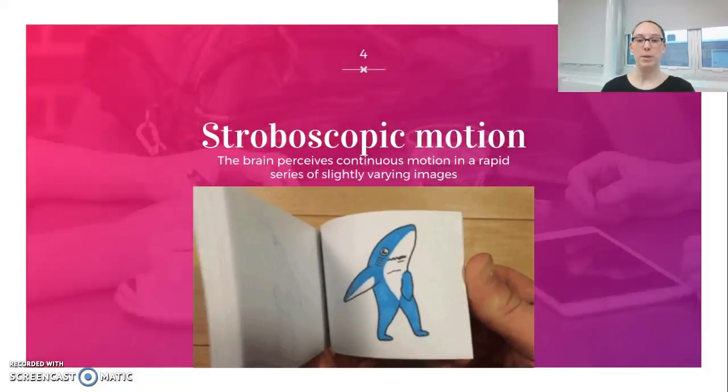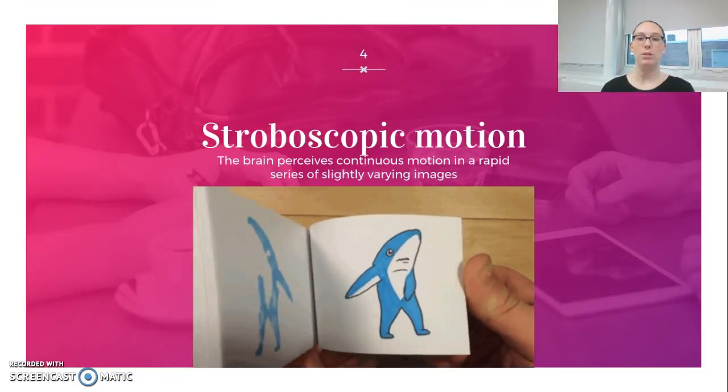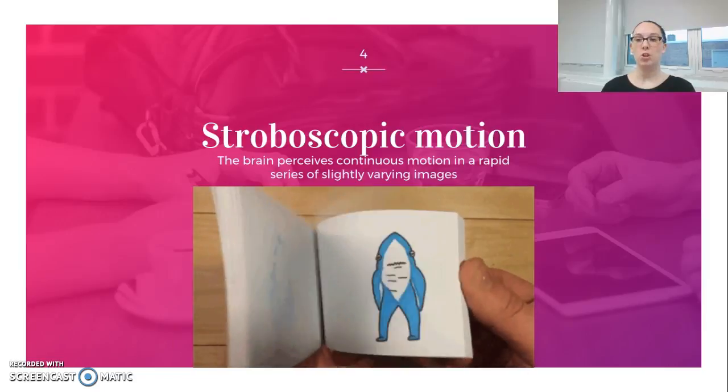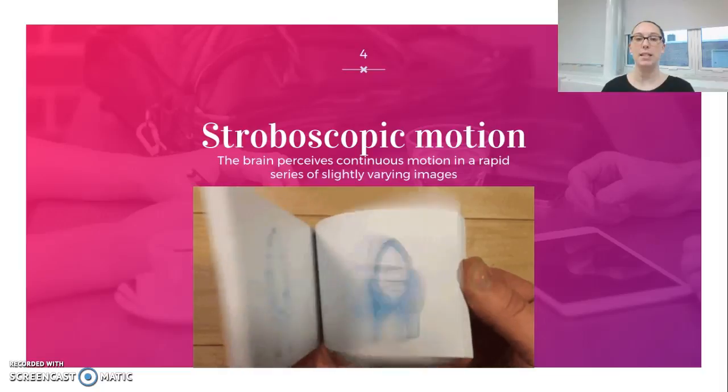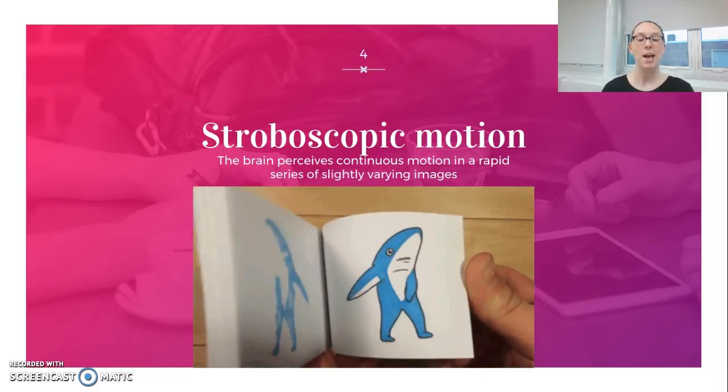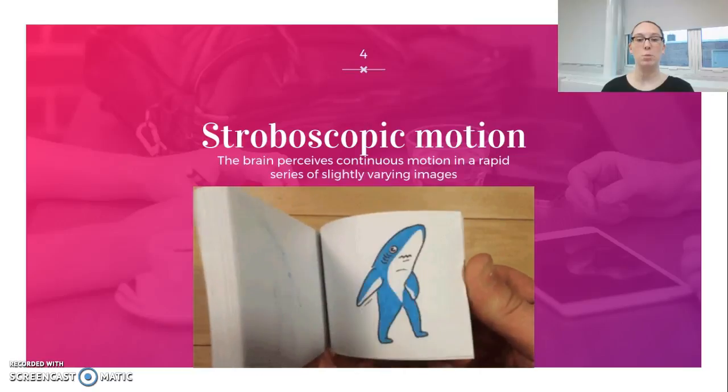Our brain also has the ability to perceive motion out of still images. This is how we're able to see movies. Movies are just a series of a lot of still images presented in really rapid succession. And this ability, or this phenomenon, is known as stroboscopic motion.